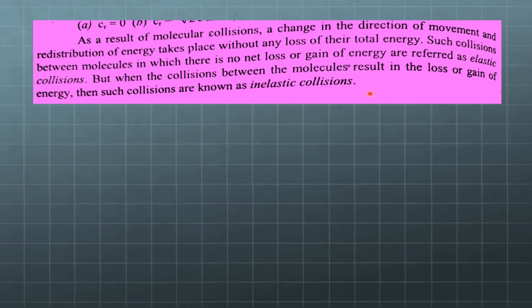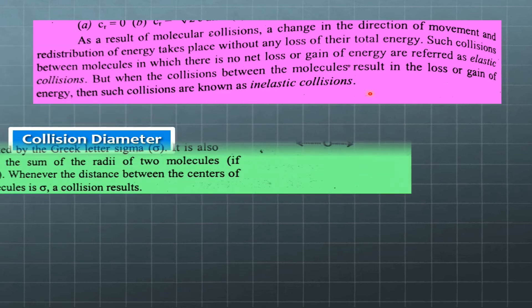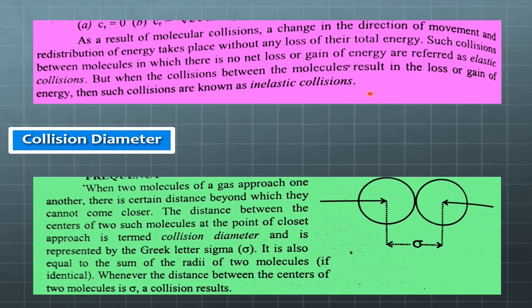Now we have collision diameter. What is collision diameter? When two molecules of a gas approach one another, there is a certain distance beyond which they cannot come closer. See here we have two molecules, molecule number one and molecule number two. They have come close to each other. When they are in such a way that they are touching the boundaries of each other, they cannot come closer than that, otherwise they will deform. At this closest approach, both molecules...